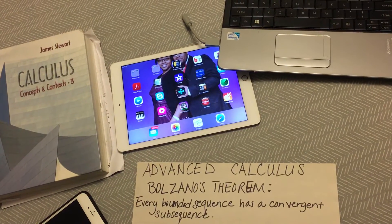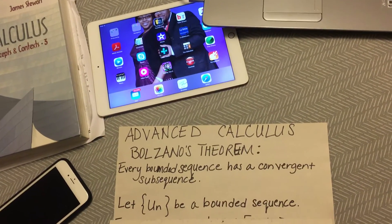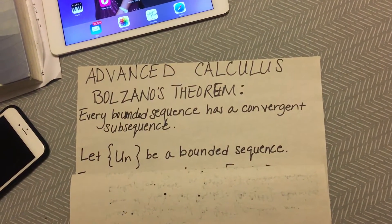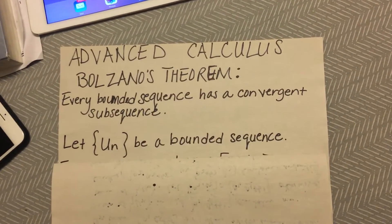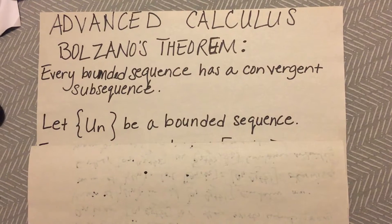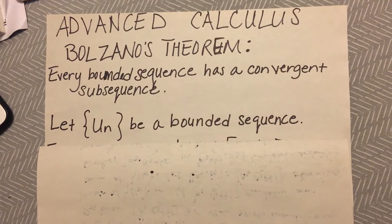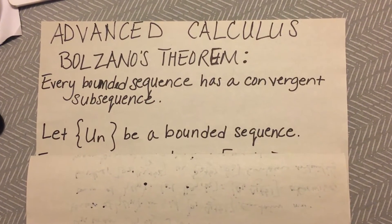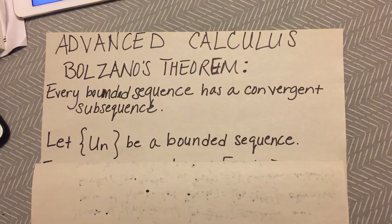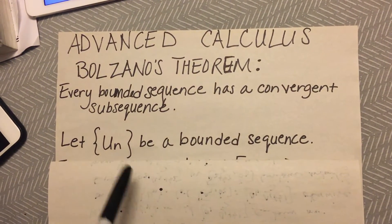Okay guys, we're going to talk some advanced calculus today. We're going to prove together the Bolzano-Weierstrass theorem, which states that every bounded sequence has a convergent subsequence. We know what a bounded sequence is, so let's not go over that. Let's take a bounded sequence and start the proof. Let U sub N be a bounded sequence.